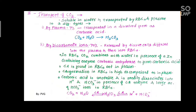Now we study them one by one. First, by plasma: out of the total percentage of carbon dioxide, only 7% is transported in dissolved form as carbonic acid. Carbon dioxide unites with water and forms carbonic acid — CO2 + H2O → H2CO3. This carbonic acid is formed in plasma. It is only 7% — very less.